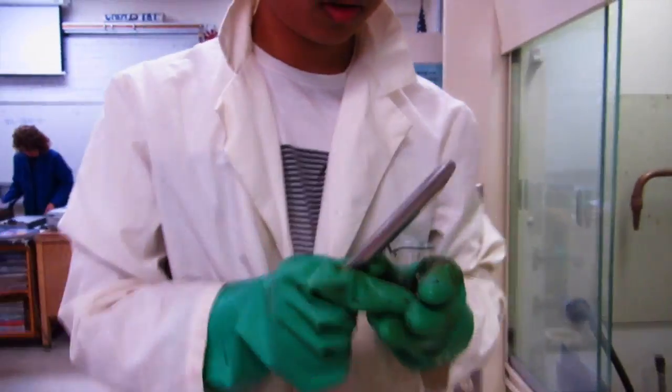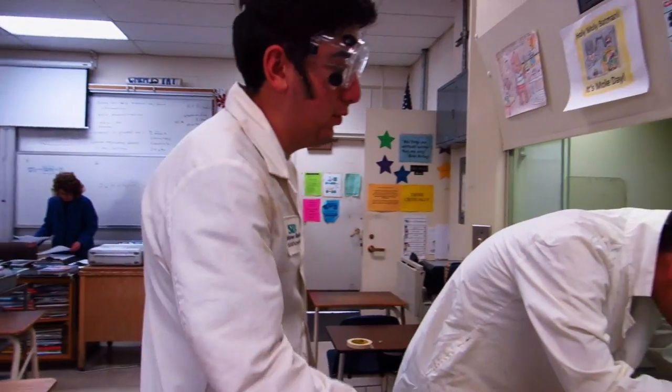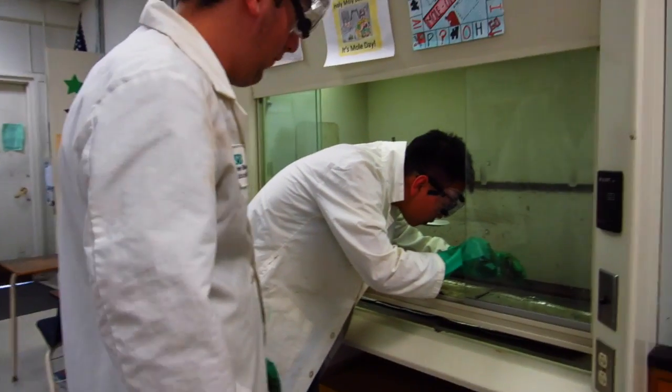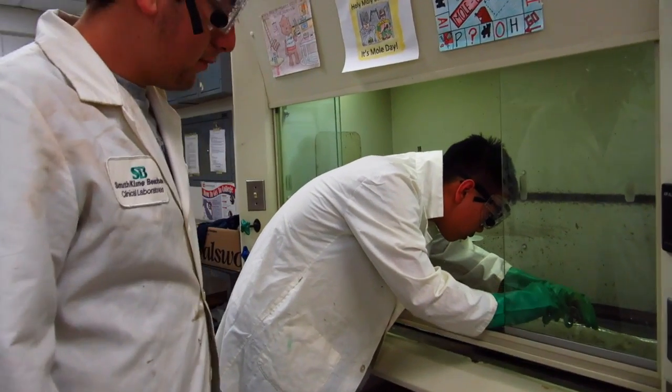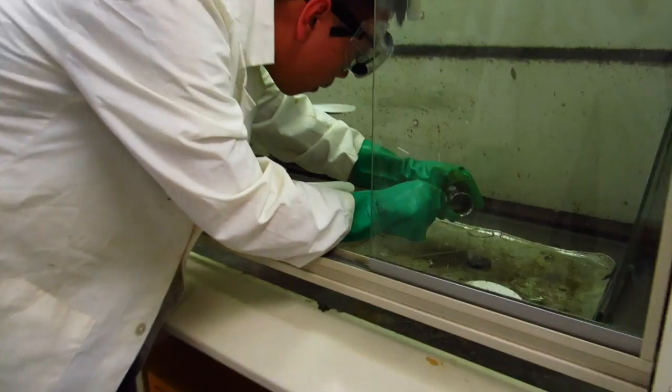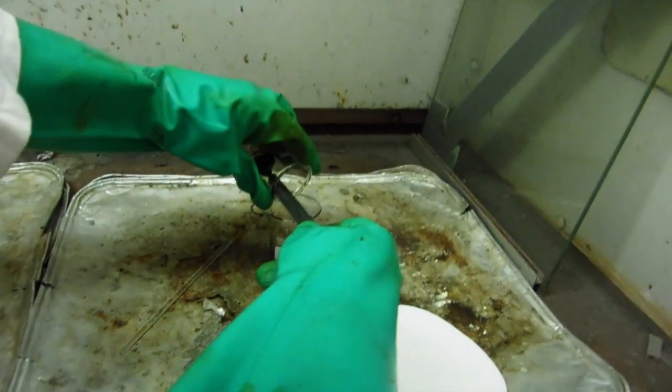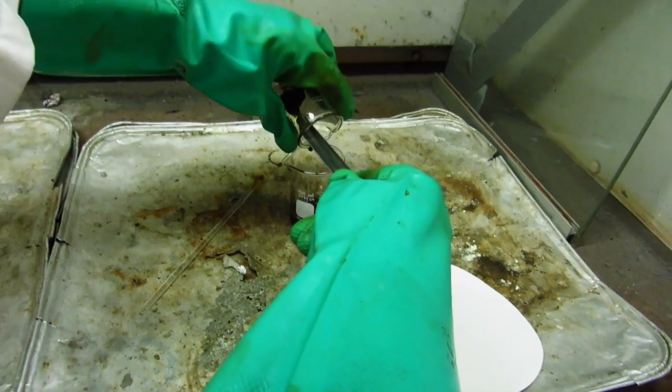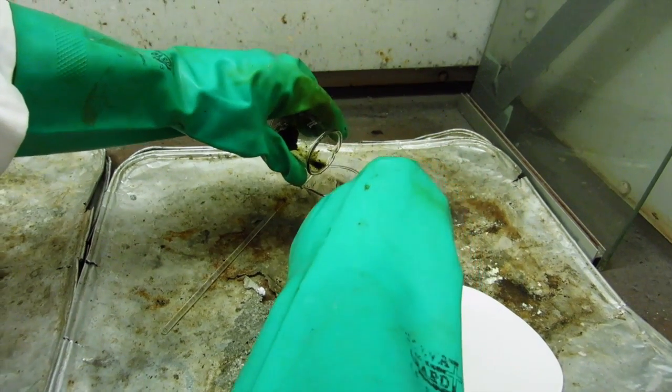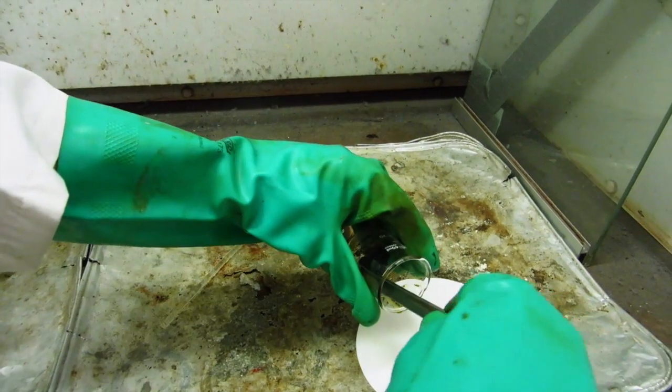So now we're going to be scraping out the nitrogen triiodide, which is produced, and putting it onto four of these filter papers to dry out. And then after we put it onto these filter papers, we're going to be separating it into three onto the ring stand of three filter papers where it's going to dry for 30 minutes.